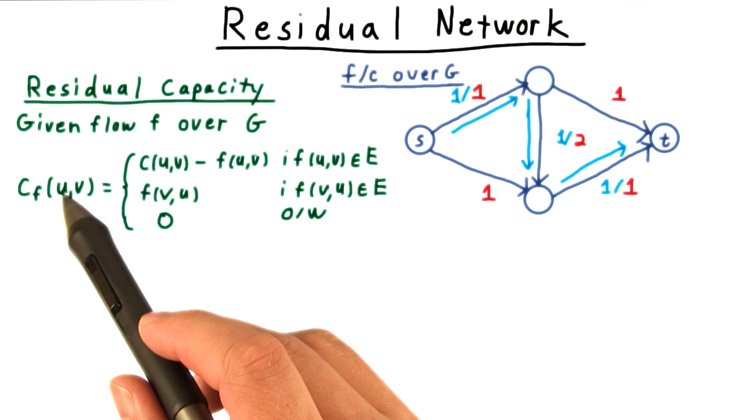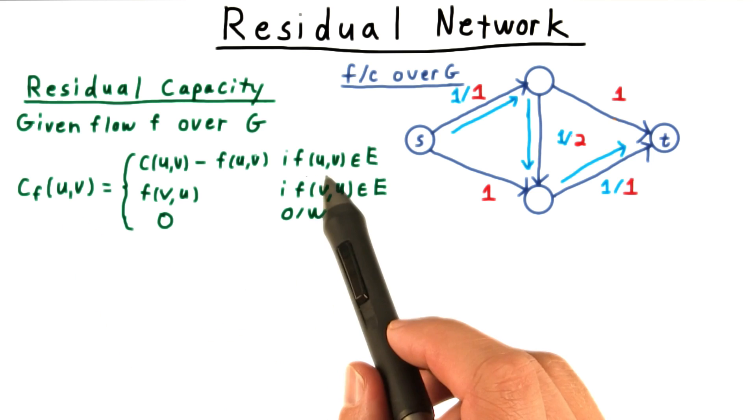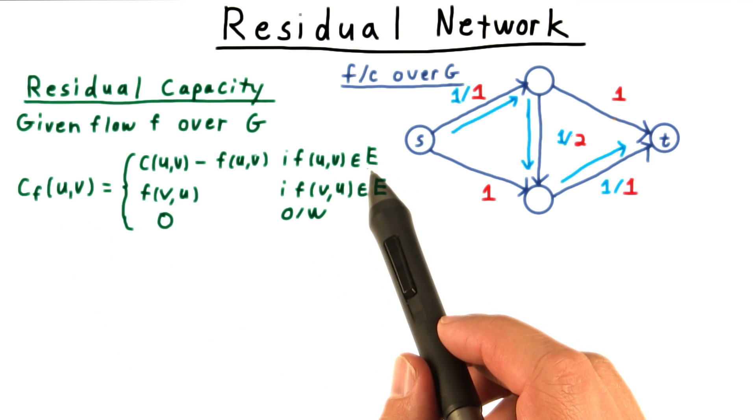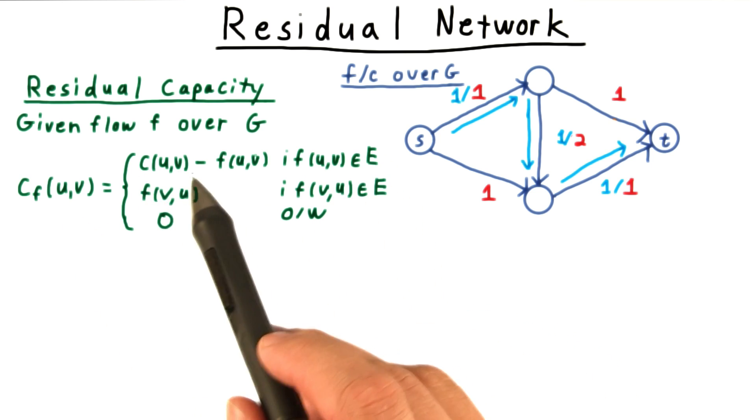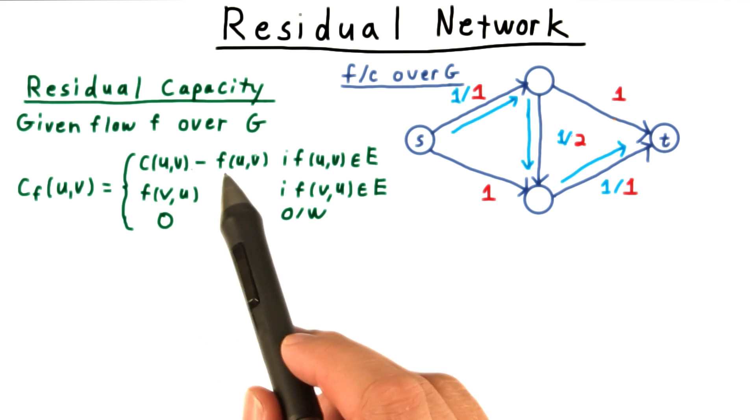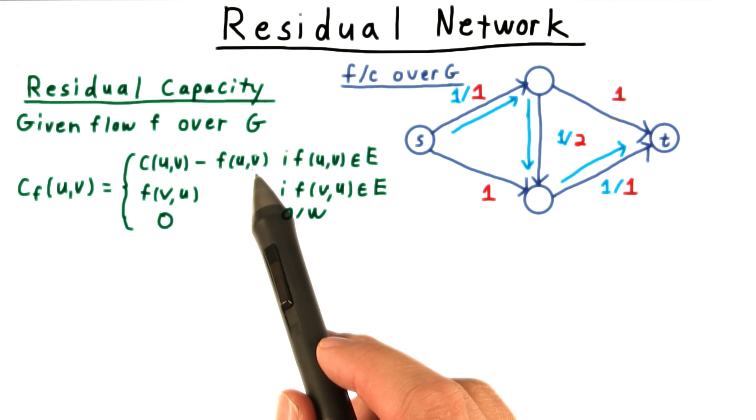Let's consider a uv edge. If uv is an edge in the original graph, then the residual capacity is the original capacity minus whatever flow we already sent across that edge.